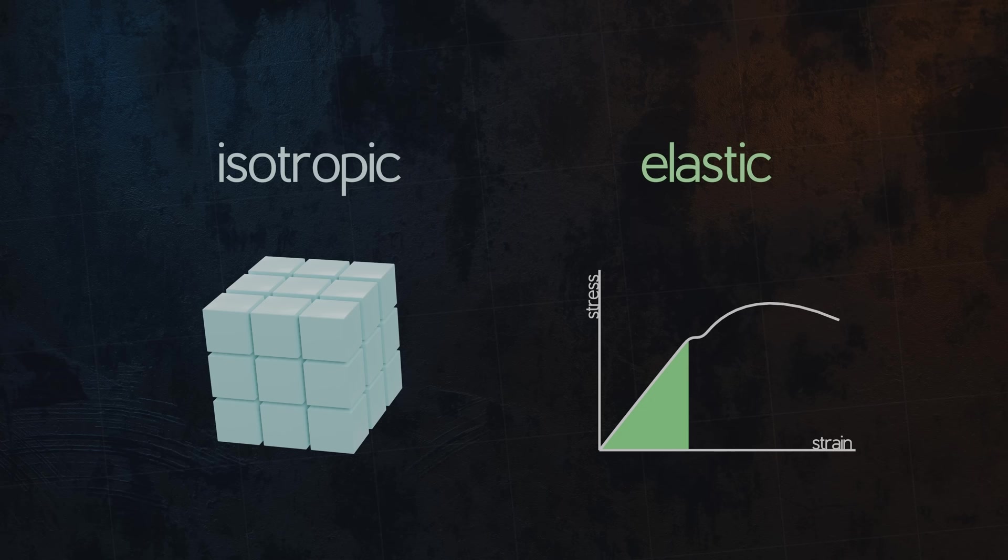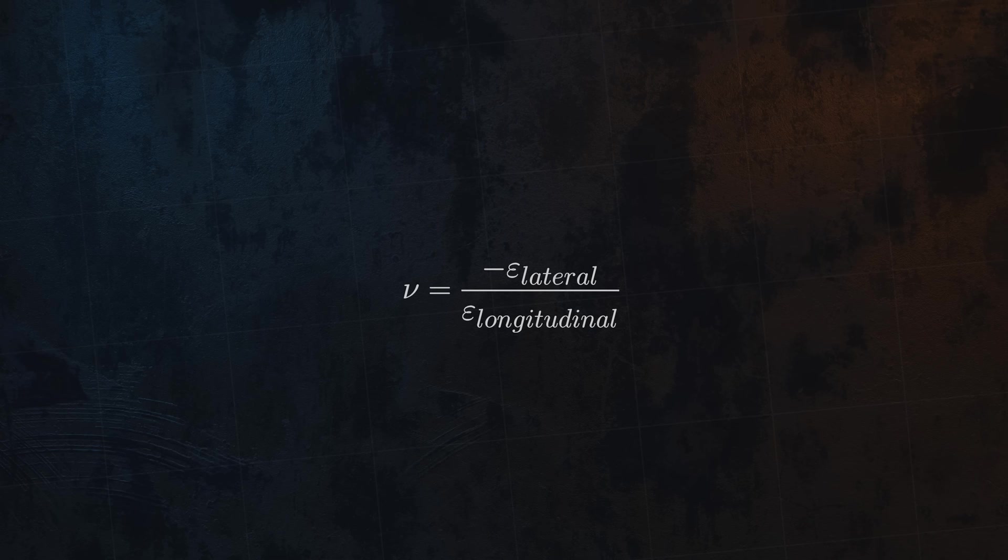Anyway, to summarize, Poisson's ratio is a dimensionless material property, which tells us how much a given material will contract in the lateral directions when we pull on it in a longitudinal direction.